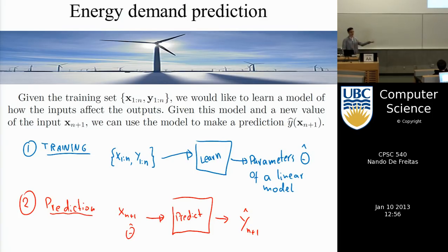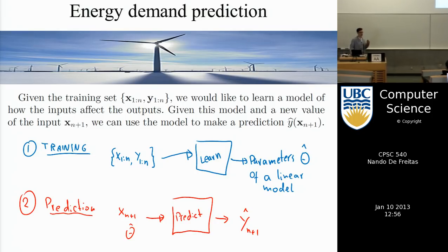At UBC, there are people who currently adjust thermostats by hand. With this system those people would be replaced by automation — and that's not a joke. Machine learning is creating a lot of automation, and automation is replacing many people's jobs. There are very interesting societal issues associated with machine learning.